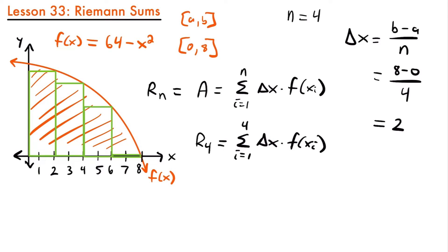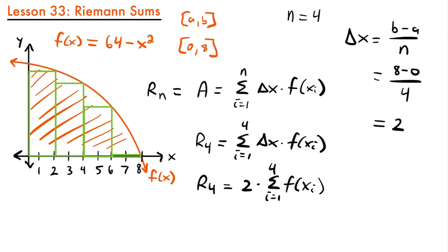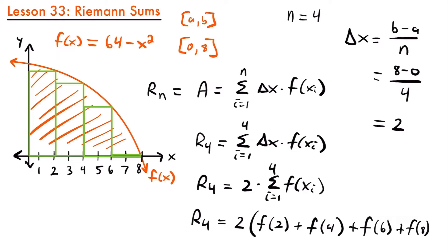R sub 4 equals 2 times the sum from i equals 1 to 4 of f(x sub i). Looking at our graph, we use the points where the corner of the rectangle touches the function: x equals 2, x equals 4, x equals 6, and x equals 8. So we can rewrite this as R sub 4 equals 2 times f(2) plus f(4) plus f(6) plus f(8).